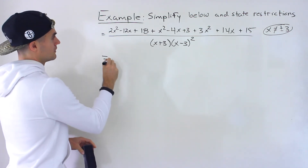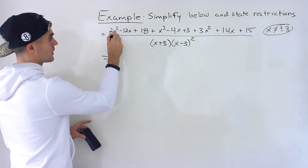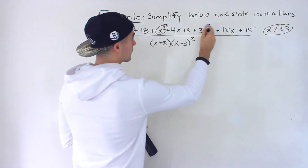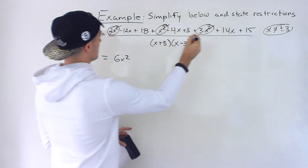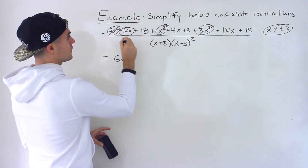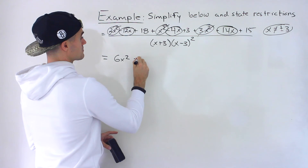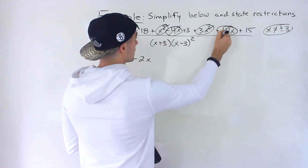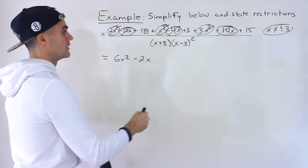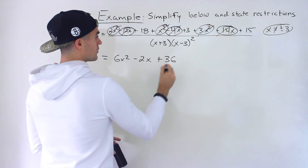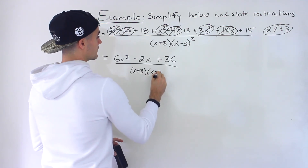Now combining like terms: the x squared terms are 2x squared plus x squared plus 3x squared, giving 6x squared. The x terms are negative 12x minus 4x plus 14x, giving minus 2x. The constants are 18 plus 3 plus 15, giving 36. So the numerator simplifies to 6x squared minus 2x plus 36, all over x plus 3 times x minus 3 squared.